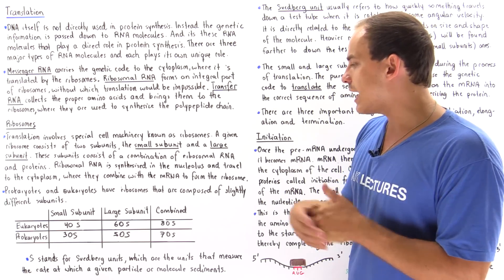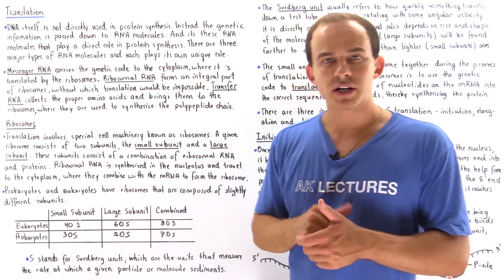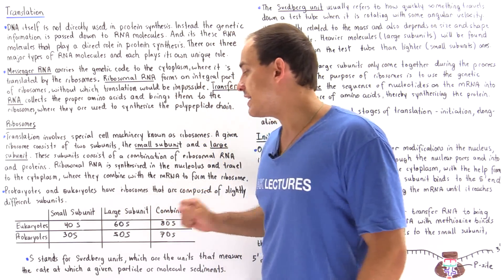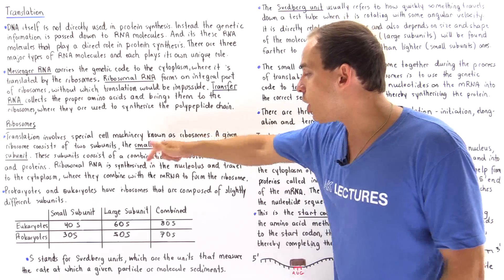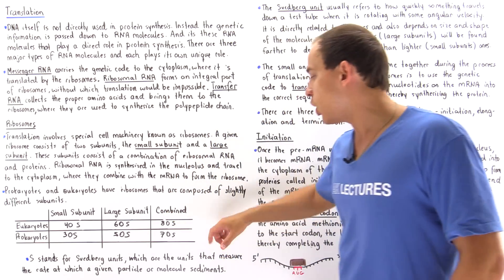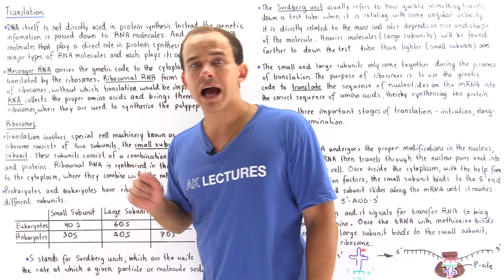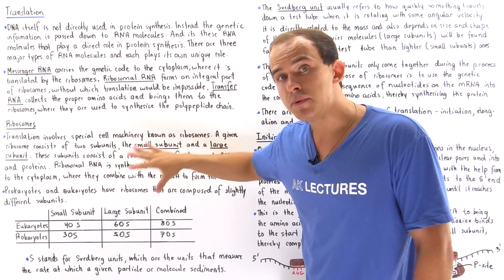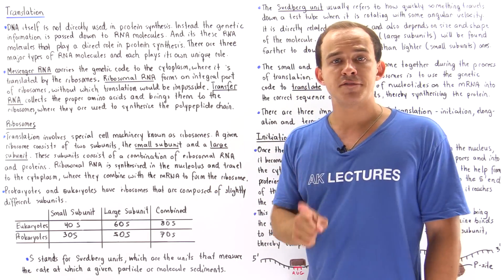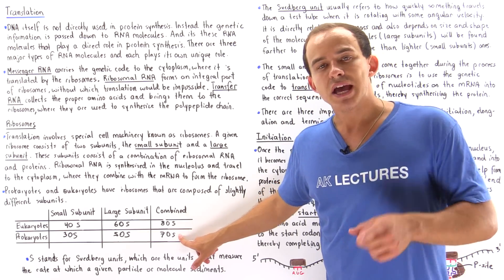In eukaryotes, the small subunit is the 40S, while the large subunit is the 60S, and they combine to form a unit known as the 80S. In prokaryotic organisms, the small subunit is the 30S and the large subunit is the 50S, and they combine to form the 70S unit.